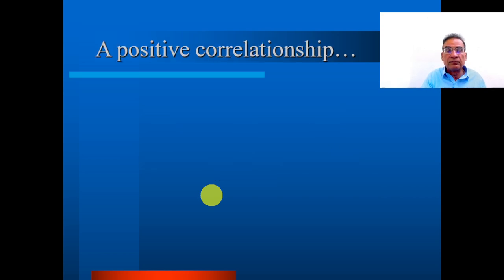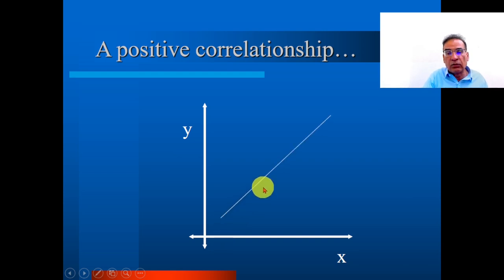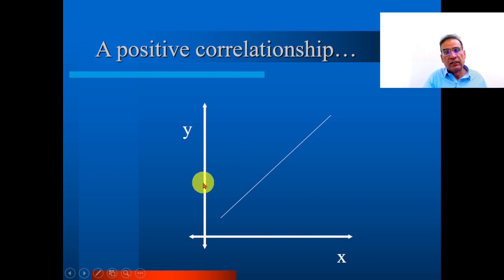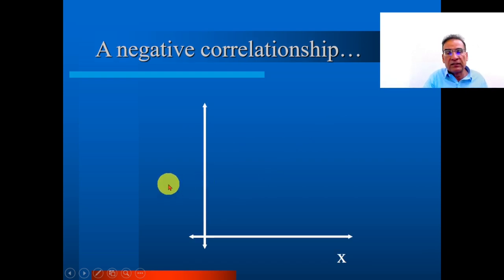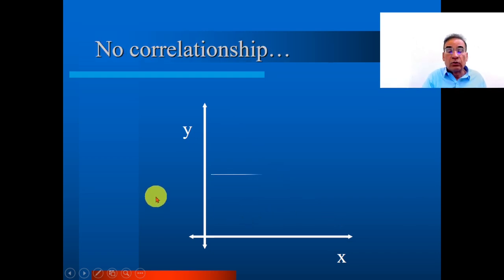A positive relationship between two variables x and y means that if x increases, y also increases. In a negative relationship between x and y, if y is decreasing, x is increasing — that is the negative relation. No relation means there is no relationship between x and y variables.